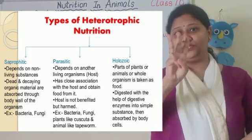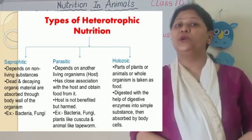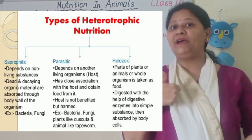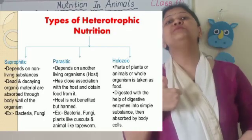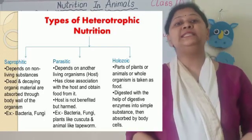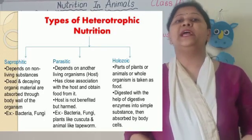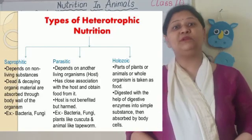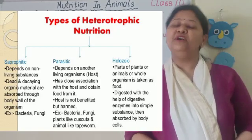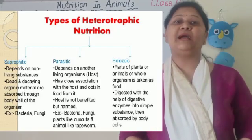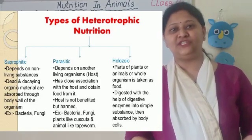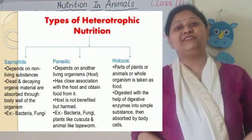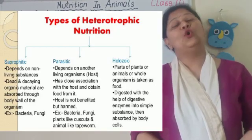It is basically of three types. The first one is saprophytic, jismeh dead and decaying organic plants or animals pe organism depend karte apne food ke liye — for example, various bacteria and fungi.